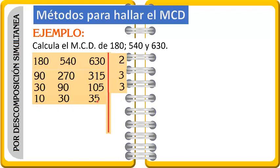¿Qué tienen en común? ¿Tienen tercia? 10 no tiene tercia, 30 sí tiene, 35 no tiene. Entonces vamos a dividir entre otro número primo que no es 3, el que sigue es el 5. 10 entre 5 es 2, 30 entre 5 es 6, 35 entre 5 es 7.